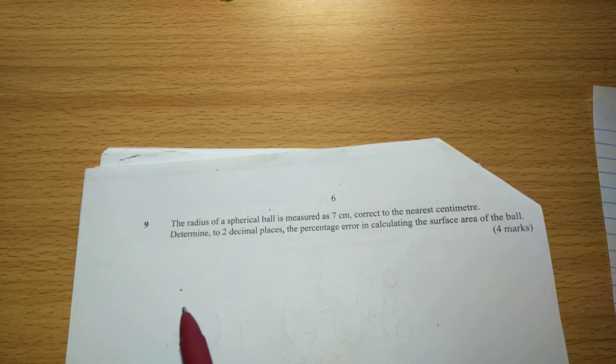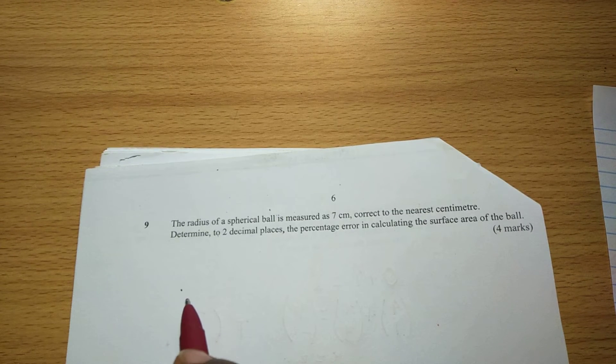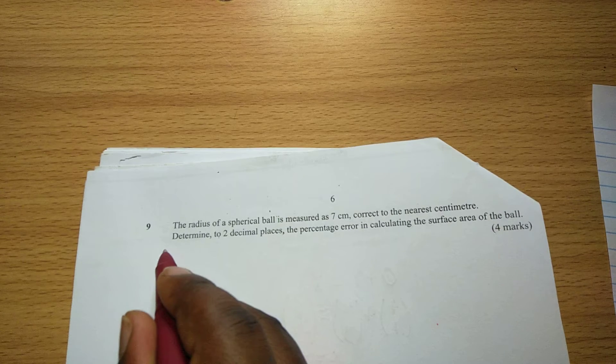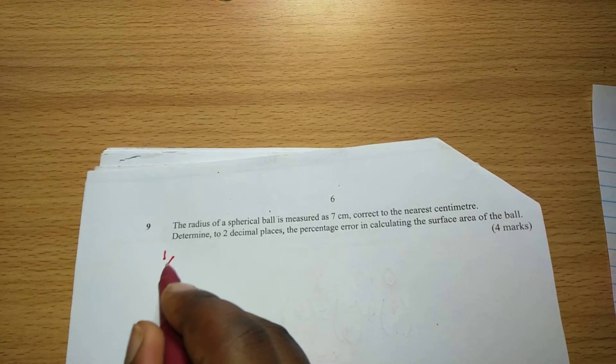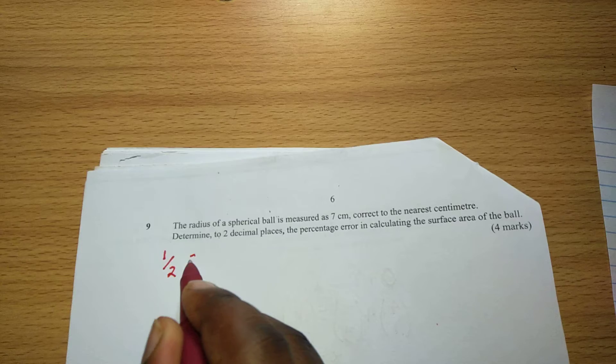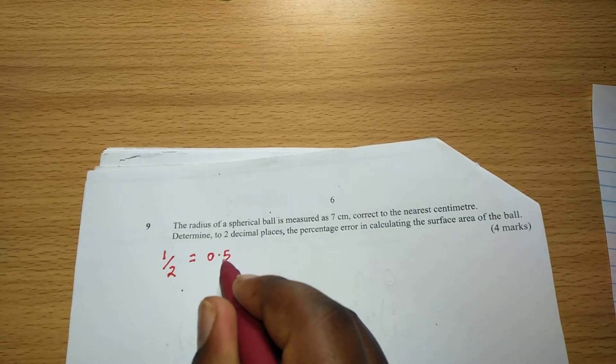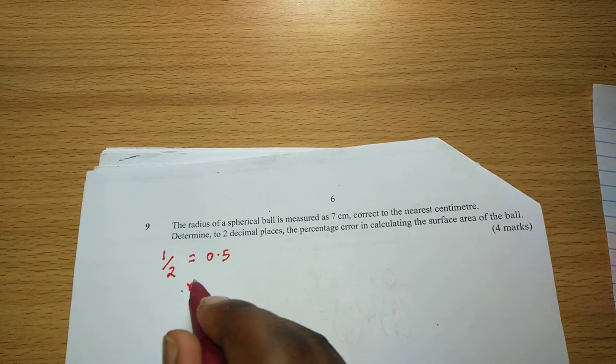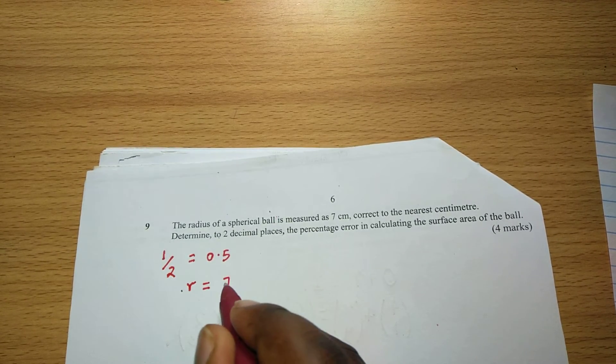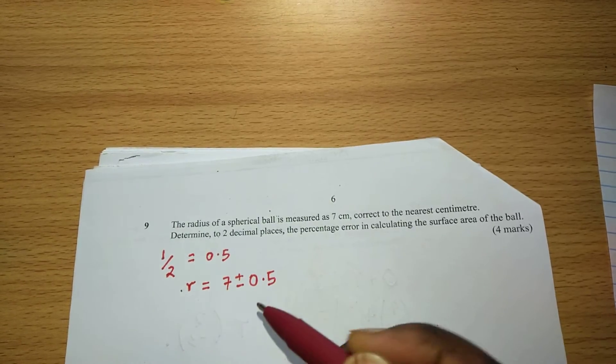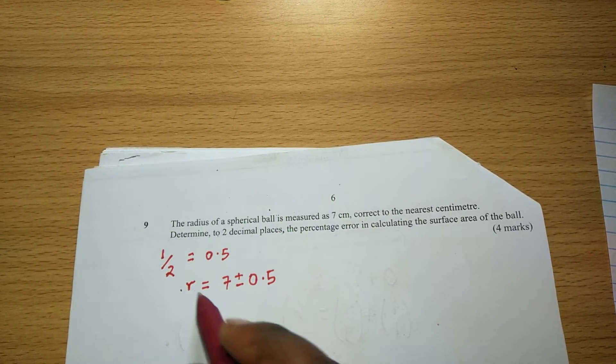So first of all what we should know here is the limits to which this radius is lying. If it has been recorded to the nearest one centimeter then it means its absolute error in the recording of this radius is 0.5. Therefore the radius will lie between 7 plus or minus the absolute error in the recording of this radius which is 0.5.